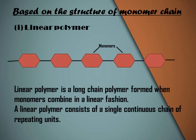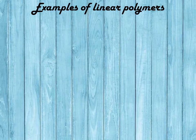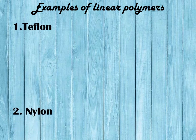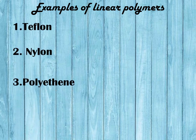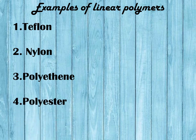Linear polymer: A linear polymer is a long chain polymer formed when monomers combine in a linear fashion. It consists of a single continuous chain of repeating units. Examples of linear polymers include Teflon, nylon, polythene, polyester, and PVC.